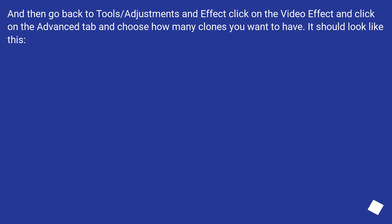Then go back to Tools > Adjustments and Effects, click on the Video Effects tab, click on the Advanced tab, and choose how many clones you want to have. It should look like this.